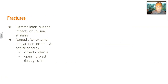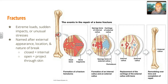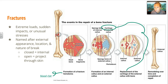Your bones aren't unbreakable. Extreme loads, sudden impacts, or unusual stresses can cause fractures. A fracture is generally named after its external appearance, location, and nature of the break. Closed is an internal break; open projects through the skin. Repair events include the formation of a fracture hematoma or blood clot, then cartilage forms and is eventually replaced by bone tissue with the help of bone cells, and remodeling over time gives you your new repaired bone.